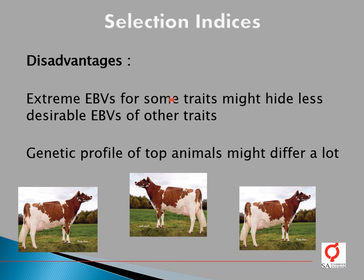What are the disadvantages of using a selection index? Sometimes an animal with an extremely good EBV for certain traits might hide less desirable EBVs for other traits. If an animal is two or three standard deviations above the mean for the breed for certain traits but poor in certain others, those extreme values might mask the total value in terms of the overall selection index. The genetic profile of top animals might therefore differ considerably.